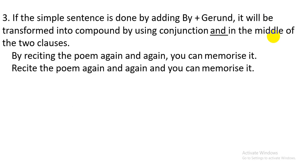Serial number three: if the simple sentence is done by adding 'by plus gerund', it will be transformed into a compound sentence by using conjunction 'and' in the middle of the two clauses. Simple sentence: 'By reciting the poem again and again, you can memorize it.' Here we have to change 'by plus gerund' into a main clause. This main clause will take the structure of an imperative sentence. Then we use 'and' in the middle of the two clauses.